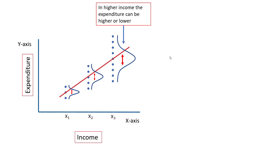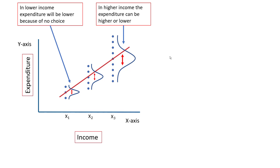Coming back to our example of income and expenditure — in the higher income group, expenditure can be higher or lower because they have a choice either to increase or decrease their expenditure. But in the lower income group, the variation in expenditure is lower because this group does not have the choice to increase or decrease expenditure. The intuition behind this assumption is that when variances are not equal, not all expenditure values coming from different values of income will be equally reliable. The observations are more closely distributed around the mean for lower values of x, making them more reliable, but for higher values of x the values are distantly distributed and hence are not as reliable.